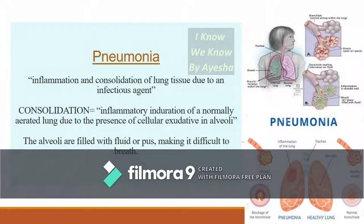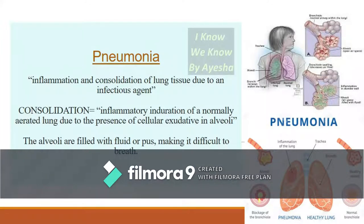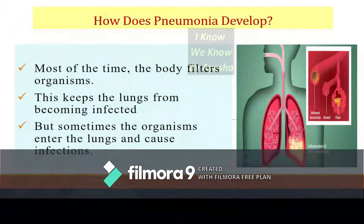Pneumonia is inflammation and consolidation of the lung tissue due to an infectious agent. Consolidation is inflammation and induration of a normally aerated lung due to the presence of cellular exudate in the alveoli. The alveoli get filled with fluid or pus, which they should not be — they normally carry only air. If filled with fluid and pus, it leads to difficulty breathing for the patient.